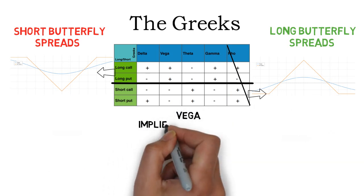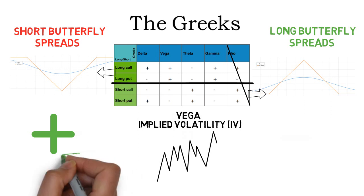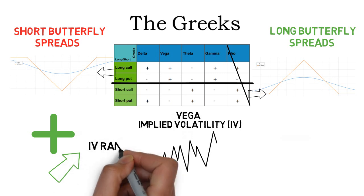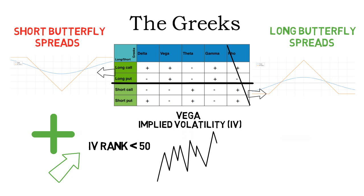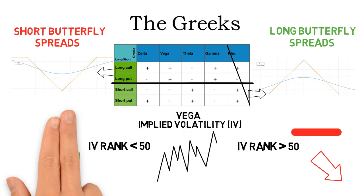Vega measures the change in the options price for a rise in implied volatility. A plus for short butterfly spreads means that they profit from a rise in implied volatility, hence they should be entered in low IV environments. To find out how high implied volatility currently is, you should use IV rank. IV rank compares the current IV of an asset to its past IV. An IV rank over 50 represents times of high IV and below 50 is a low IV environment. You should thus enter short butterfly spreads when IV rank is under 50. As Vega is negative for long butterfly spreads, long butterfly spreads profit from a drop in implied volatility and should be entered in times of higher implied volatility, so IV rank over 50.